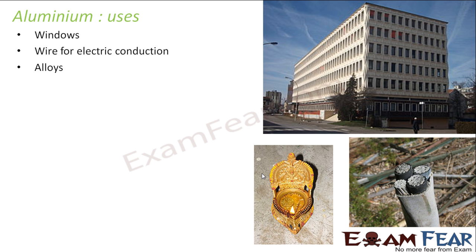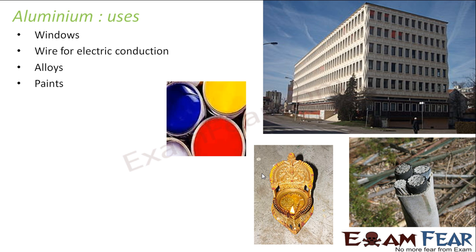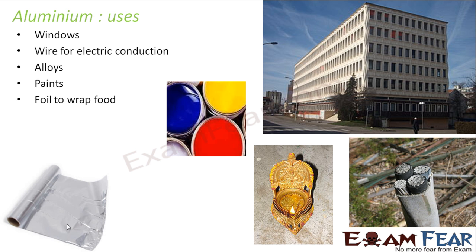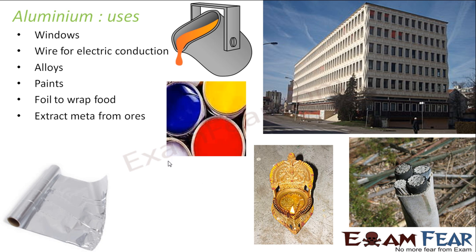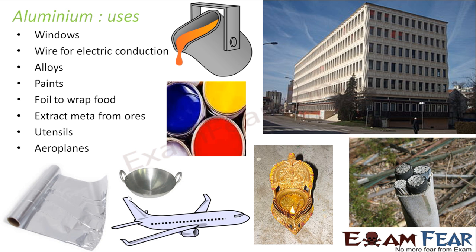A lot of alloys use Aluminium and these alloys are very good — they have good shine, they are stable, they are durable and they are resistant to attack. Aluminium is also used in panes and in foils to wrap food. It is also used to extract metals from ores. A lot of utensils in kitchens use Aluminium. It is also used in aeroplanes because it is light and very strong.